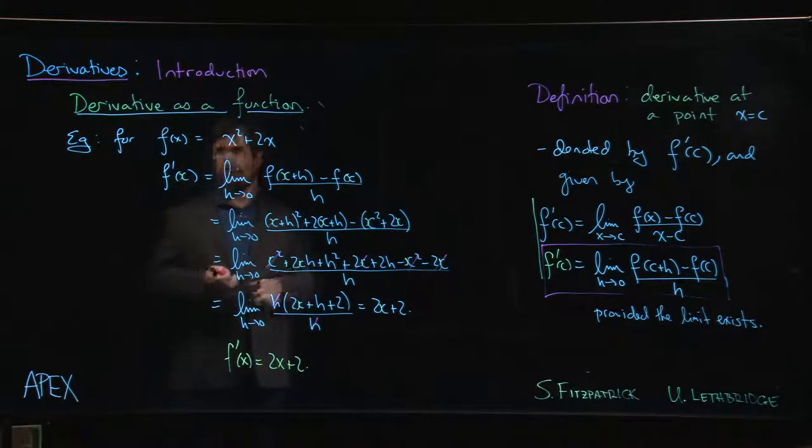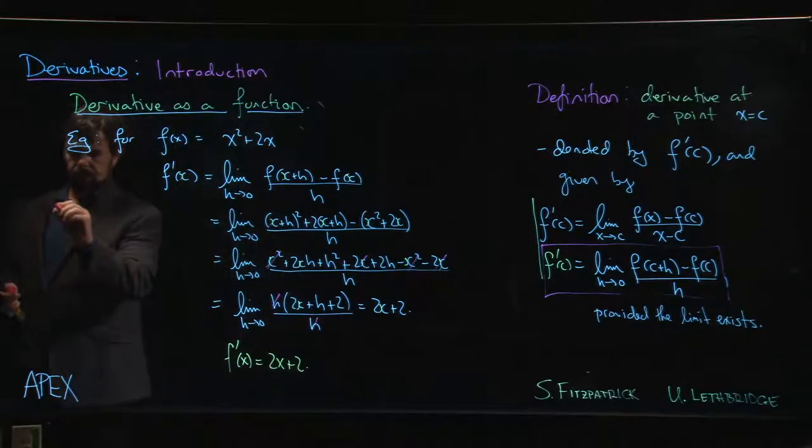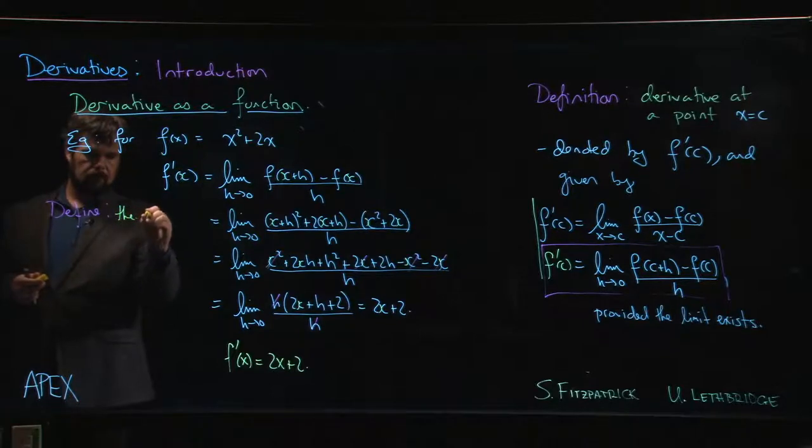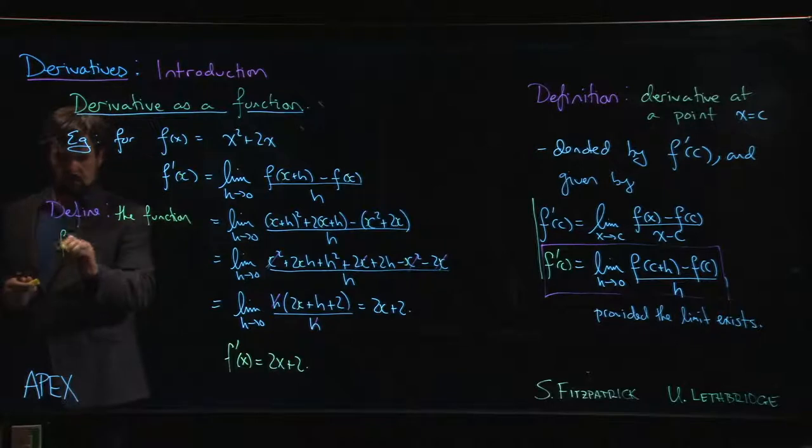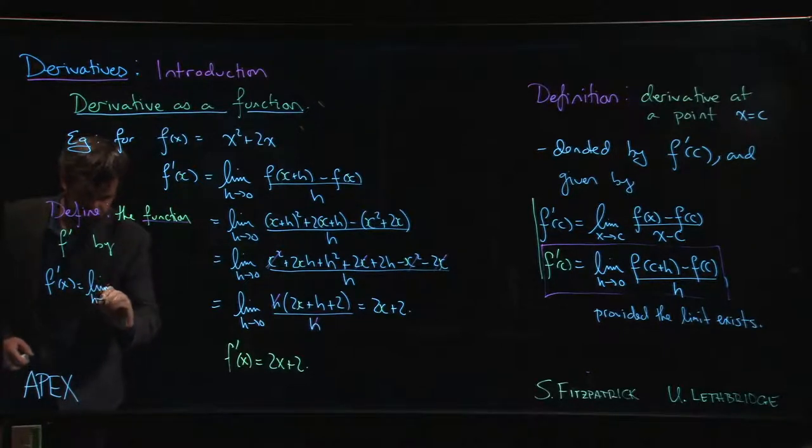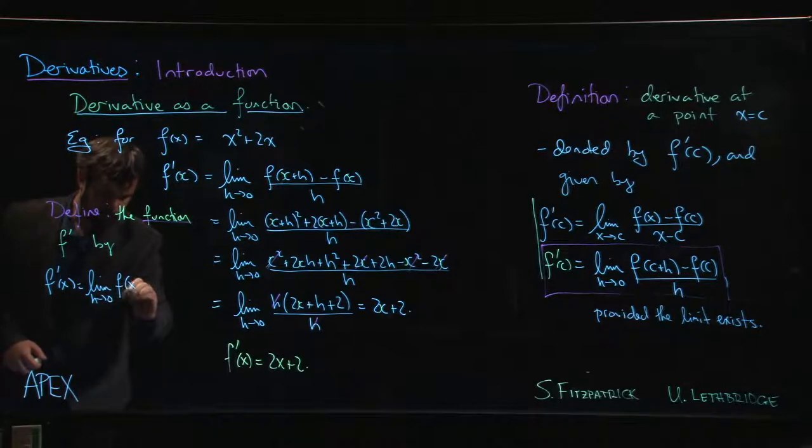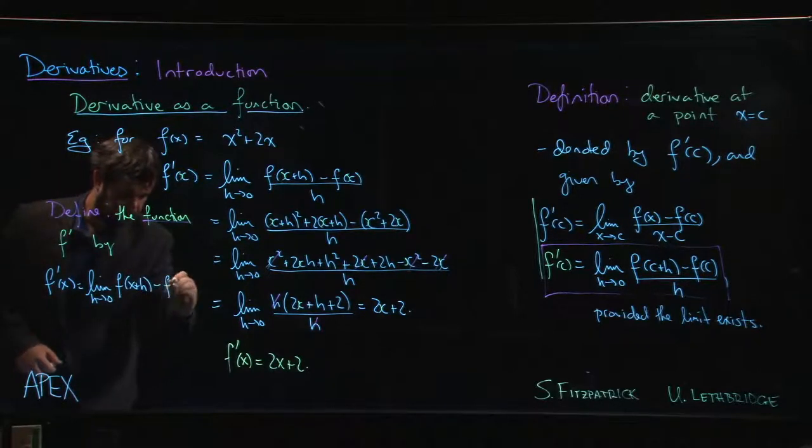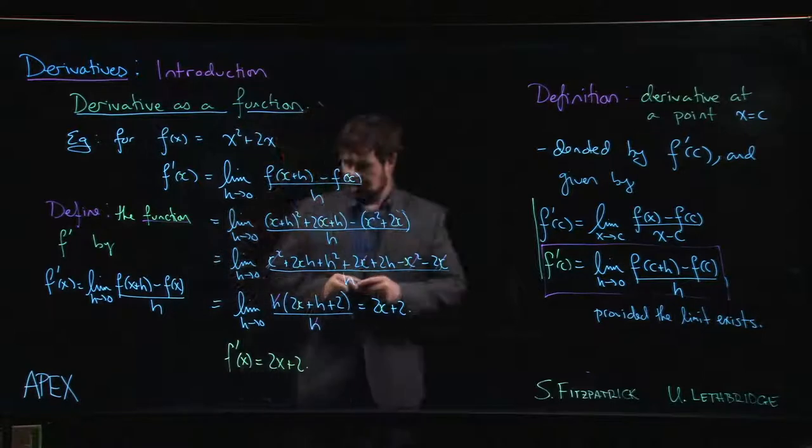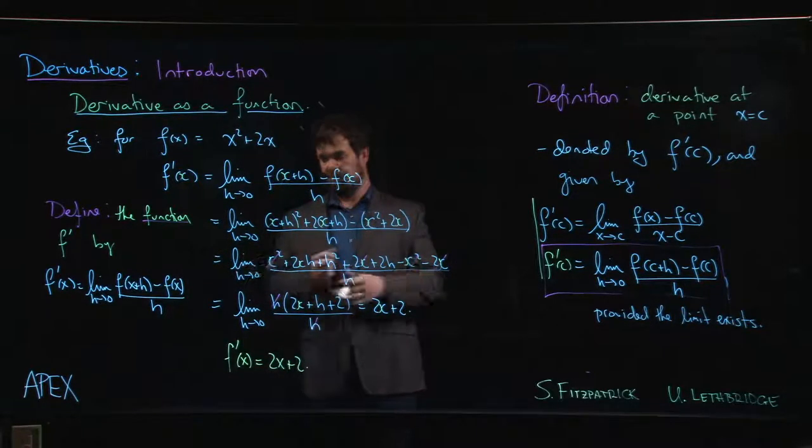And so this allows us to make a definition. We can actually define the function f prime by, well, we define it by this limit. So we say f prime of x is equal to the limit as h going to 0, f of x plus h minus f of x over h. With the usual warning that this only makes sense if the limit exists.